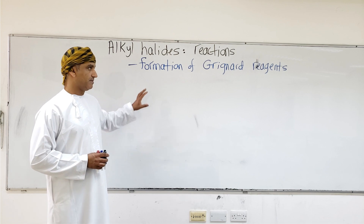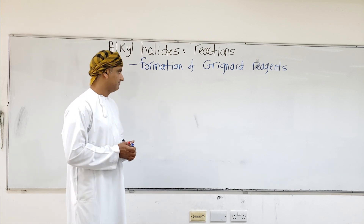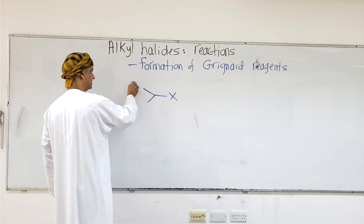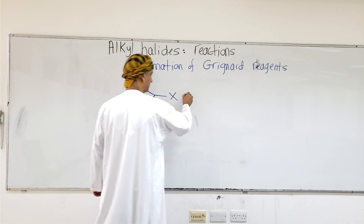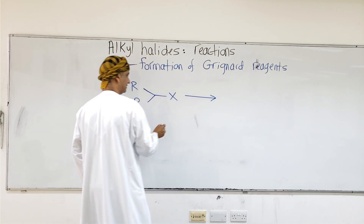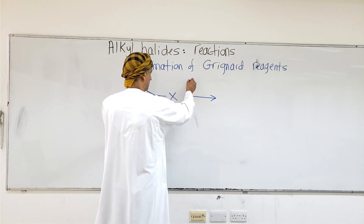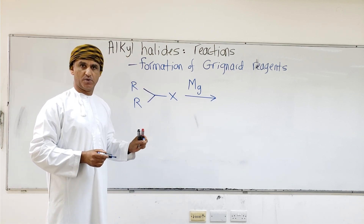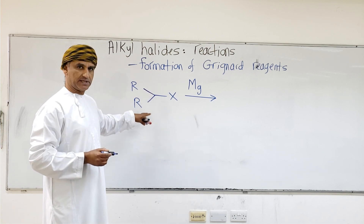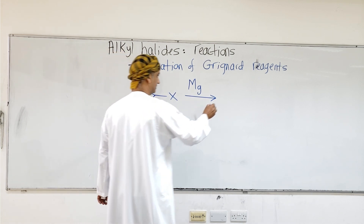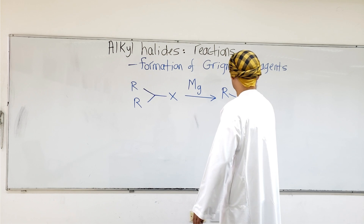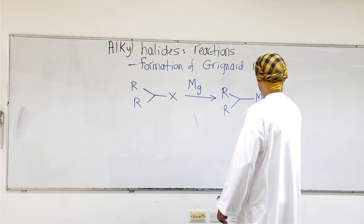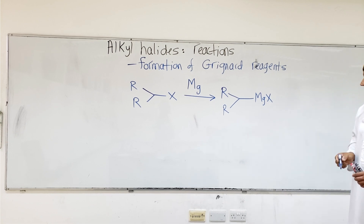We begin with the formation of Grignard reagents. This is the general structure of alkyl halides. If we take this as a general structure, we can react the alkyl halide with elemental magnesium. If elemental magnesium reacts with an alkyl halide, this product is obtained where magnesium inserts between the carbon and X of the C-X bond.